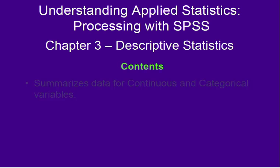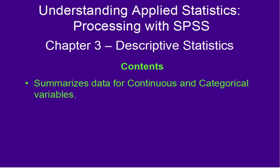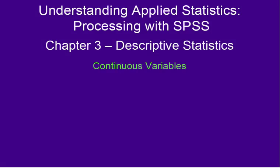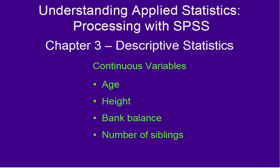In this module, we'll take a look at techniques for summarizing data for continuous and categorical variables. When we think about continuous variables, think about a continuum of numbers, say a number line. Most of the variables we encounter are continuous variables. For instance, age, height, bank balance, or number of siblings. These are all continuous variables.